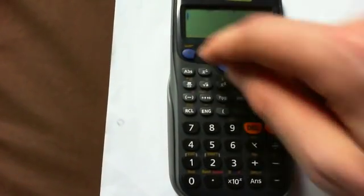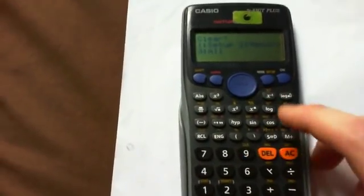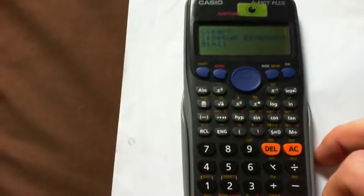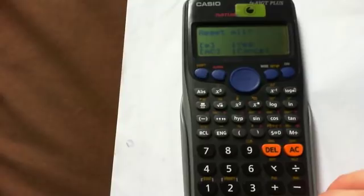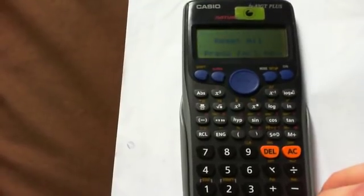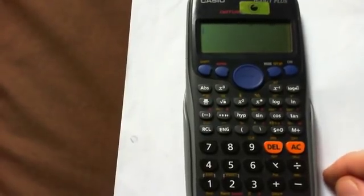And to do that, you do shift nine, and that will come up with, shift nine will come up with another menu to clear all the information stored in the calculator at the minute. So we have three three for all, equals for yes, reset all, press AC, and then that puts it back to standard mode.